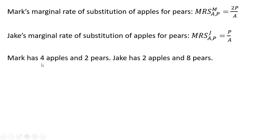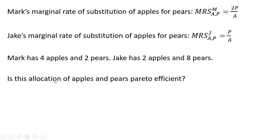Mark has four apples and two pears. Jake's endowment is two apples and eight pears. Is this allocation of apples and pears Pareto efficient?